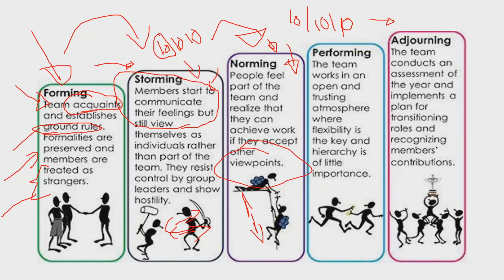Norming leads to Performing — the fourth stage. The team works in an open and trusting atmosphere where flexibility is the key and hierarchy of title is not important. You're not focused on getting a particular position; your focus is on achieving the goal — winning the trophy. Everyone settles their differences and works together toward the shared target.